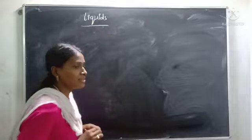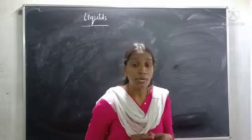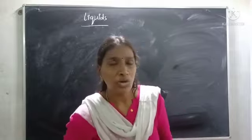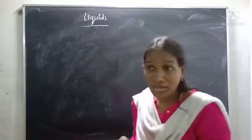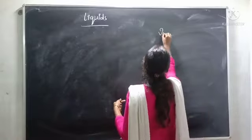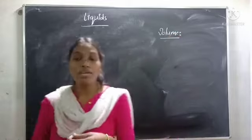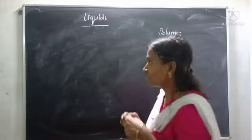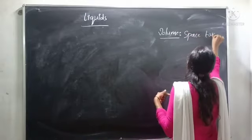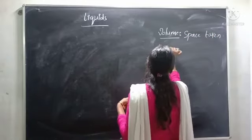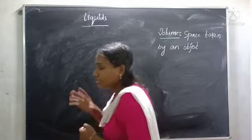Today we are going to learn about liquids. Our aim is to learn how to be sure if something is a liquid. Today we are going to learn about the different properties of liquids. Today's keyword is volume. Volume means nothing but the space taken by an object. Space taken by an object is called volume.